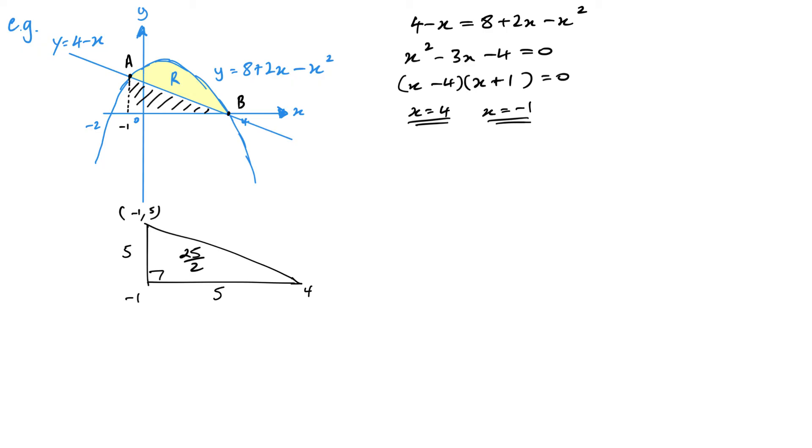Next, I need to find the area under the curve between A and B. So the area under the curve between A and B is going to be between 4 and negative 1, and that's of 8 plus 2x minus x squared. So it's very straightforward, just integrate and then substitute in.